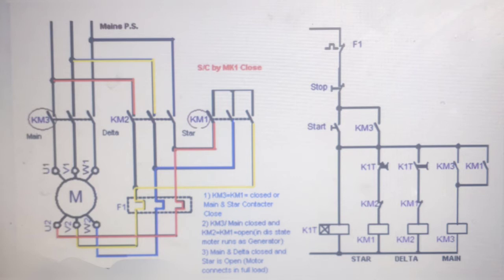In operation, the main conductor KM3 and the star conductor KM1 are closed initially, and then after a period of time the star conductor is opened and delta conductor is closed. The control of the conductor is by the timer.